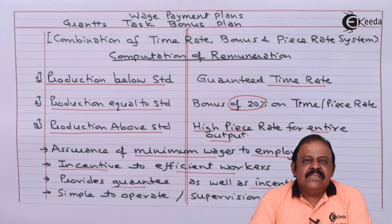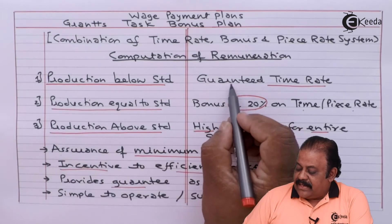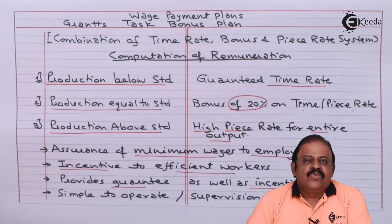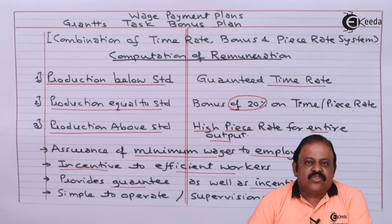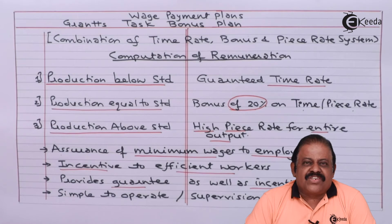The main disadvantage of this method is that slow workers may not be encouraged to work hard, because they are going to get the guaranteed time rate regardless. So this method is of no use for motivating slow workers to work hard to achieve the target. Let us do one question on this method.